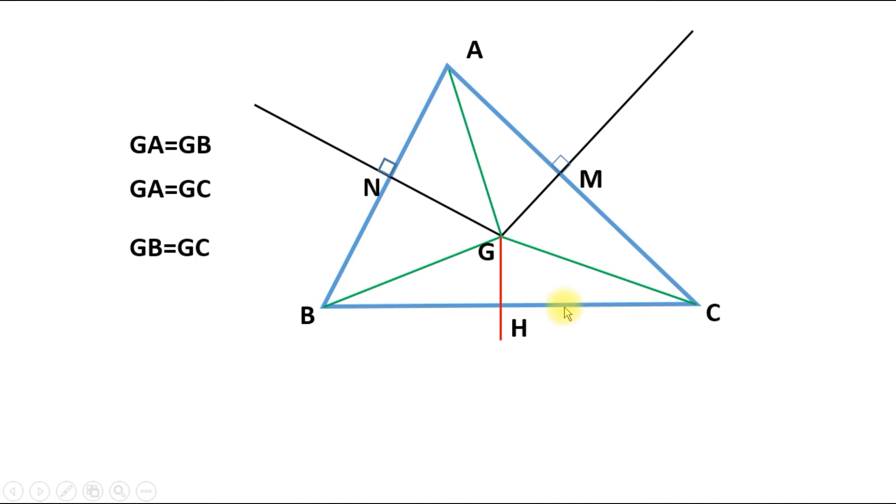If they're congruent, this means the angle GHC must equal the angle GHB. And since this is a straight line, then GHC and GHB must both be 90 degrees, which makes GH perpendicular to BC.